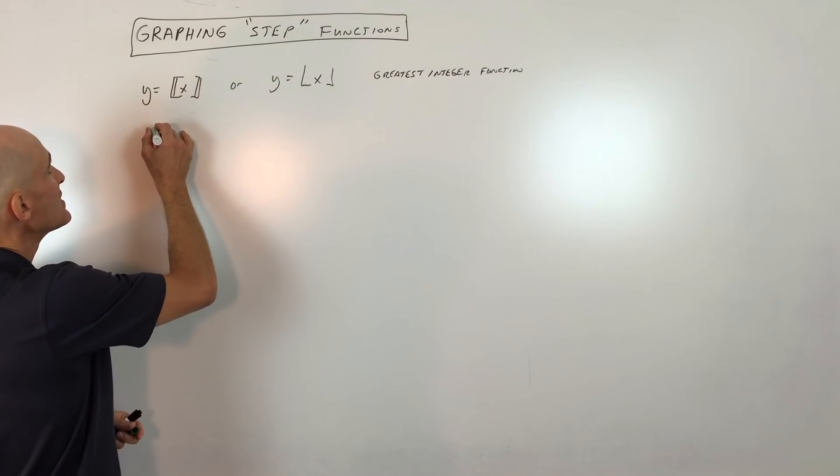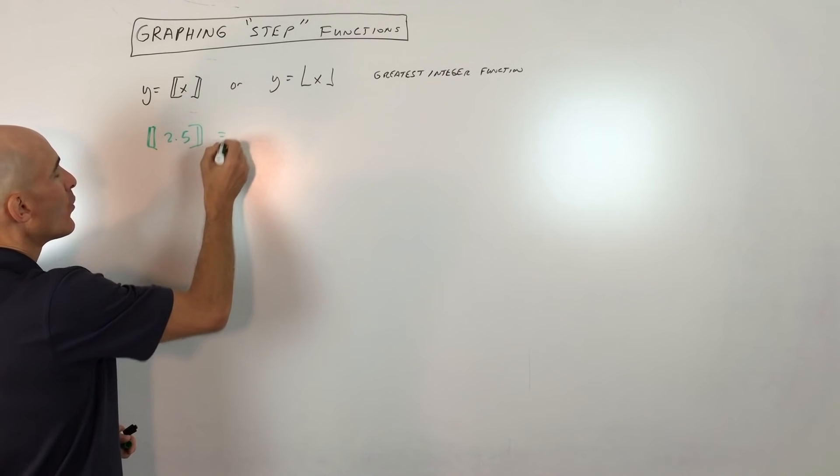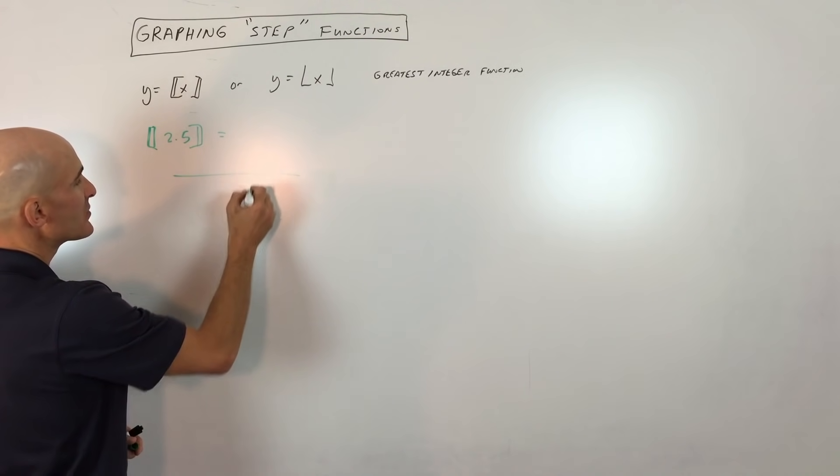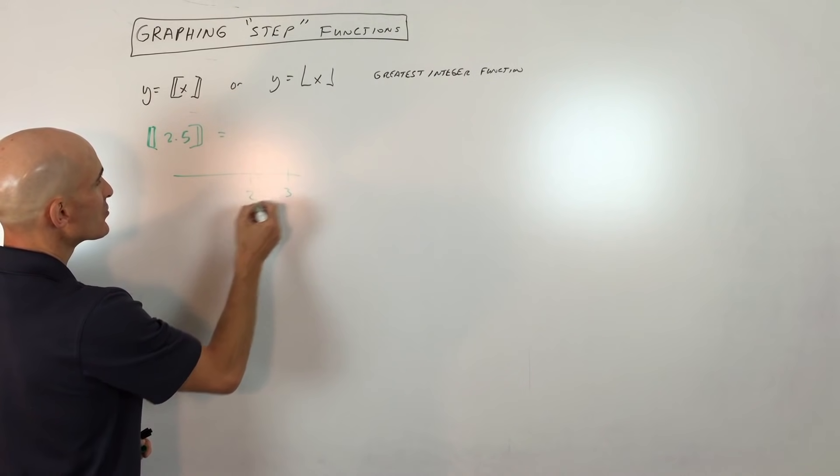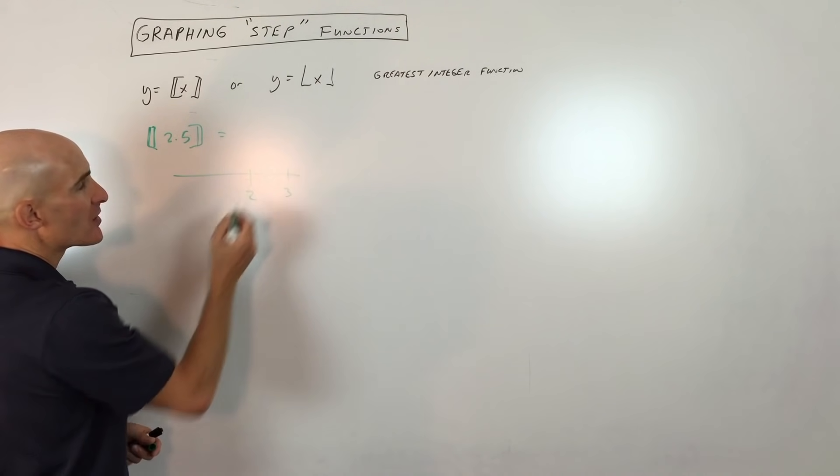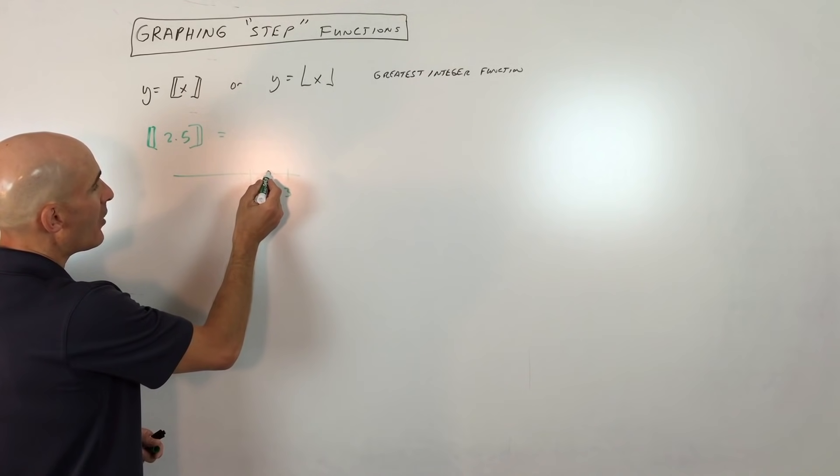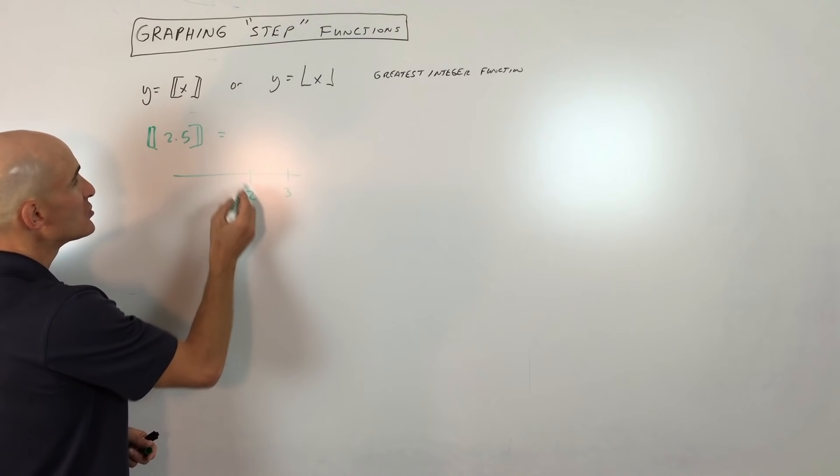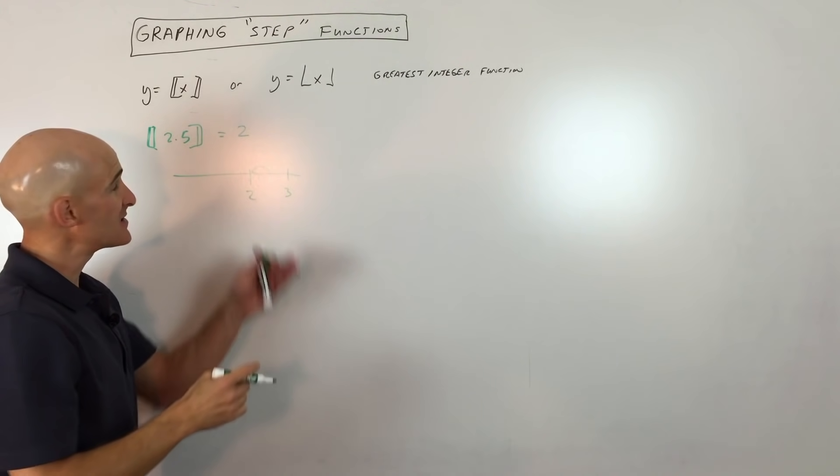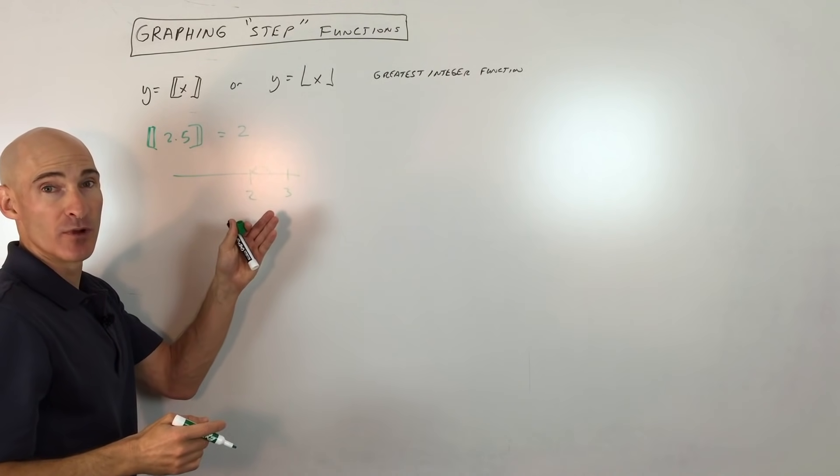So I'll show you an example. Say for example, we wanted to simplify ⌊2.5⌋. Well, if you think of the number line, here's 2 right here, and here's 3 right here. 2.5 is right about in the middle. So when we round down, we're rounding to 2. So this is going to equal 2. That's the next integer below.